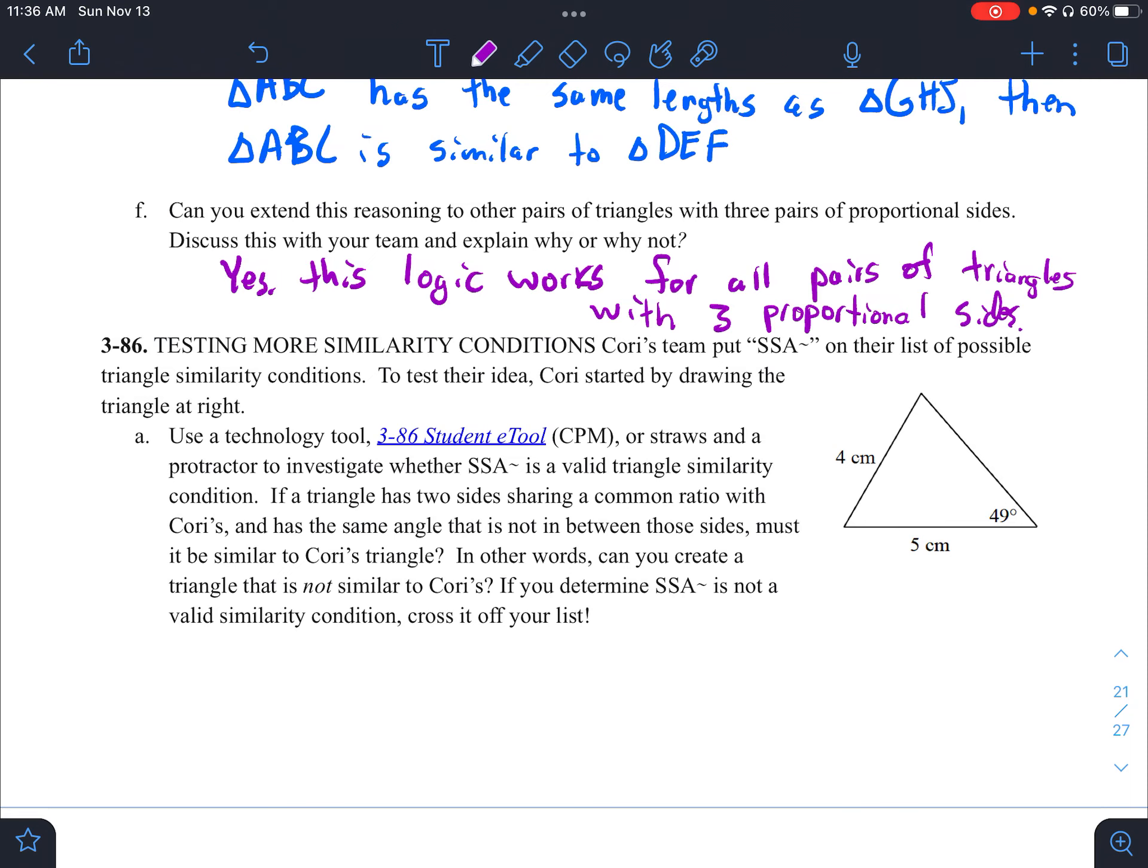So in letter A, it says, use the technology tool and determine whether side side angle is a valid triangle similarity. If triangle has two sides sharing a common ratio with Corey's and has the same angle that is not in between those sides, must it be similar to Corey's triangle? But other words, can you create a triangle that is not similar to Corey's? If you determine side side angle, it is not a valid similarity condition. We can cross it off our list. Side side angle similarity is not valid.